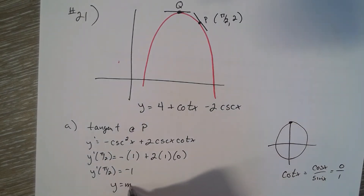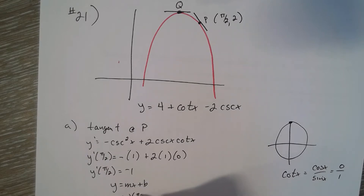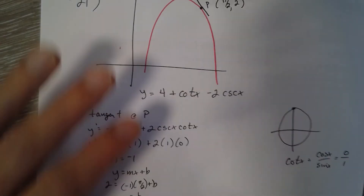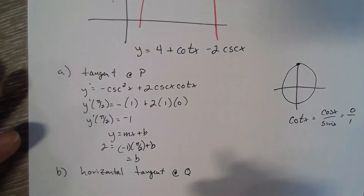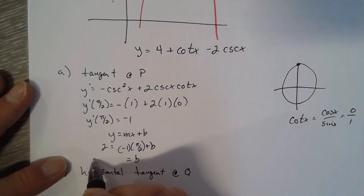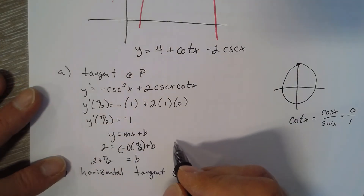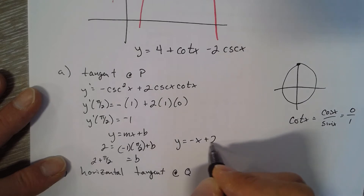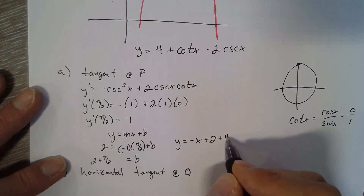Using y = mx + b with slope negative 1, x = π/2, and y = 2, we solve for b to get 2 + π/2. So the tangent line equation is y = -x + 2 + π/2.